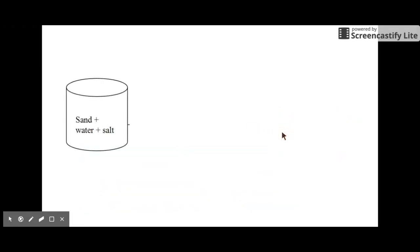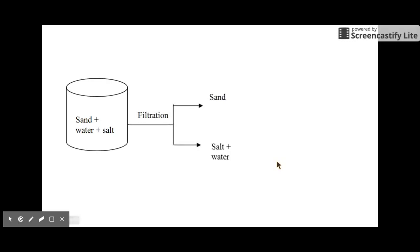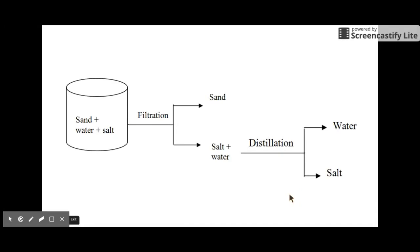Here's an example: take a solution of sand, water, and salt and separate this mixture using both distillation and filtration. First, filter the solution — this separates out the solid sand particles from the liquid. The salt and water, being smaller than the filter paper, pass through. Next, if you said distillation, you'd be right. Based on different boiling points, the water and the salt are separated — water having a lower boiling point than salt, so it gets distilled out.